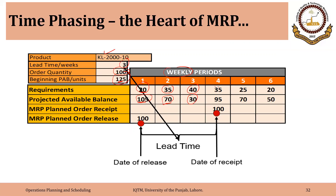In week four, the requirement is 35 and available is 30. So the available inventory is less than the requirements. We need to have a new lot of this item available at the start of week four. The lot size policy is 100, so we need to have 100 items available at the start of week four. There is a lead time of three weeks, so we need to place the order three weeks prior to week four — that is week one. That is lead time offsetting.